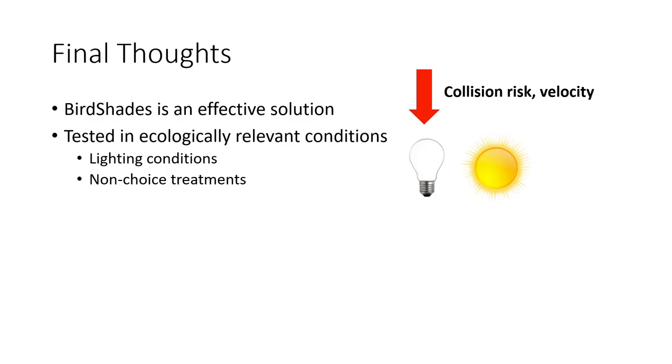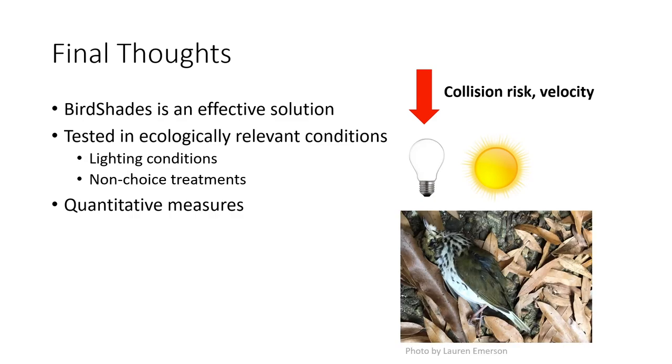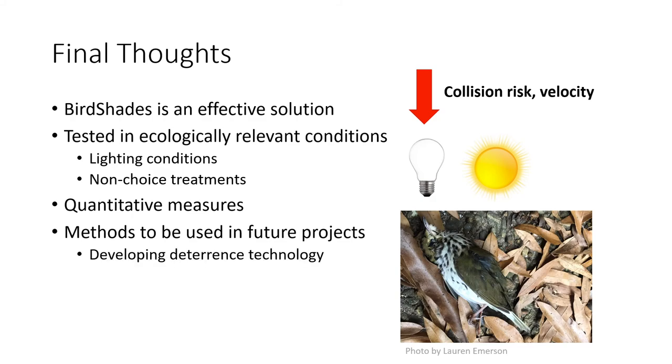Our study is unique in that we included quantitative measures, in our case velocity. This can allow us to not only determine collision risk, but mortality risk as well. These measures are also much less subjective in comparison to the avoidance collision scoring which you typically see in the collision literature and that you saw earlier in our talk. We hope that some of these methods will be implemented in the future in both the development of deterrence technology and in furthering our understanding of what influences risk in the first place.